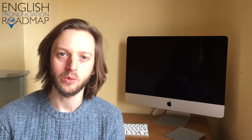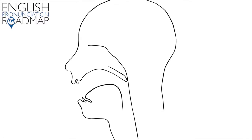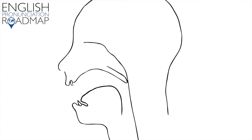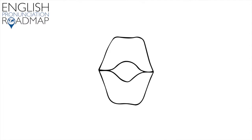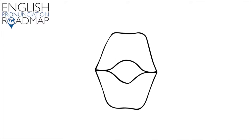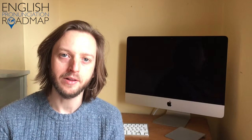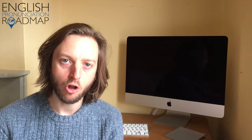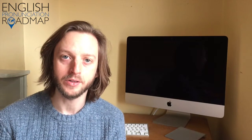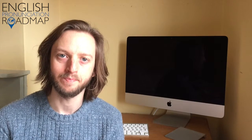Well, the OO vowel sound is made with the tip of your tongue down behind your bottom teeth, and the back of the tongue is high in the back of the mouth. The lips are rounded, the jaw is loose, and the teeth are apart. The OO vowel sound is long in duration, and of all the vowels, the back of the tongue is in the most high and backed position.